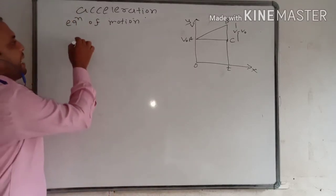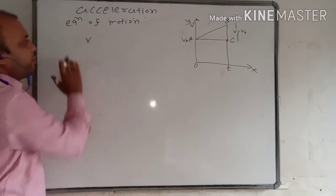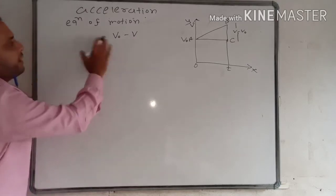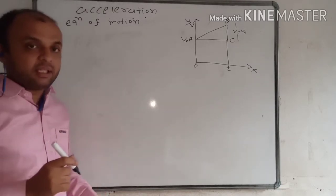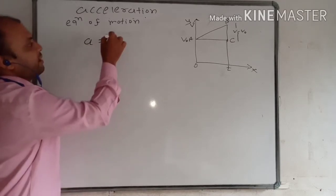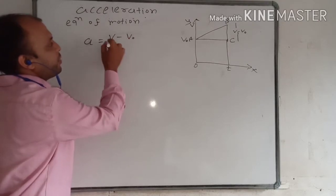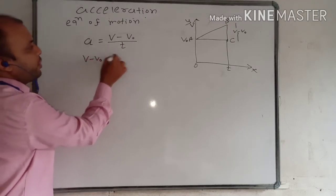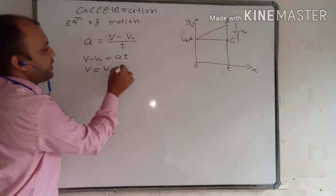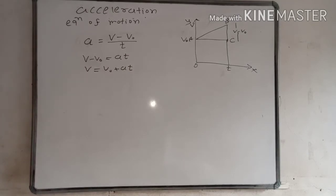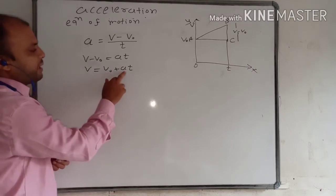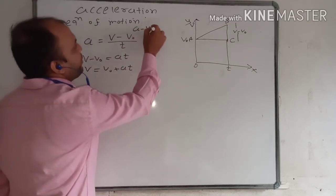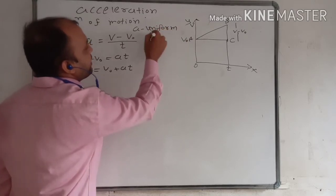Acceleration is final velocity minus initial velocity divided by time. From this equation we can say V minus V₀ equals A times T, so V equals V₀ plus A times T. Here you can see that velocity equals initial velocity plus acceleration times time, where A is uniform acceleration. This is the first equation of motion.